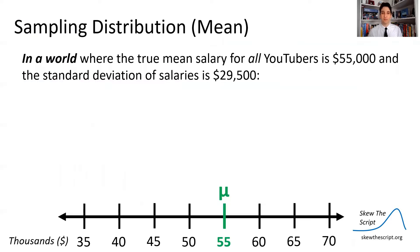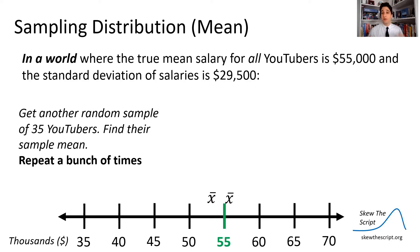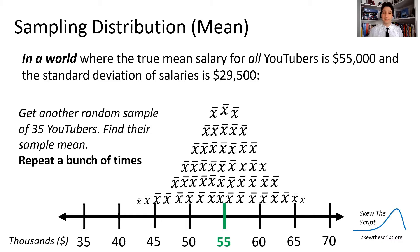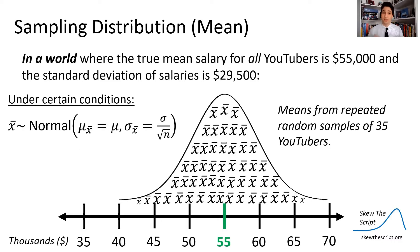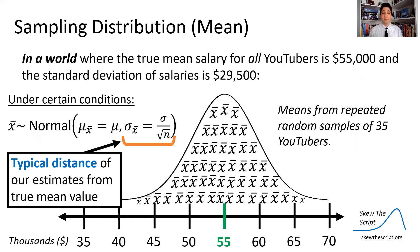Let's take a trip on down to theory lab. We're not real place, but we're going to pretend like we know the population mean and think about what kinds of samples we would get. So in a world where the true mean salary for all YouTubers is $55,000 with a standard deviation of $29,500, we're going to get a random sample of 35 YouTubers from this world. And we get one sample mean. This one happened to be a little bit below $55,000 among the 35 we sampled. And then we could do this a bunch of times, just get a bunch of random samples of 35 YouTubers. And each time when we get a sample mean among our sample, we're going to get some different estimates. We're going to see that those estimates are going to make a normal curve, approximately normal curve. And under certain conditions, we can actually model this normal curve as follows. We're going to be centered at the true mean. So most of our means are going to be centered around that 55,000 true population number. And the typical distance from the true mean can be modeled by this formula. The standard deviation of those salaries, the raw standard deviation divided by the square root of our sample size.